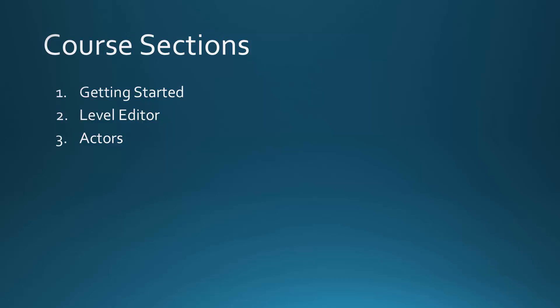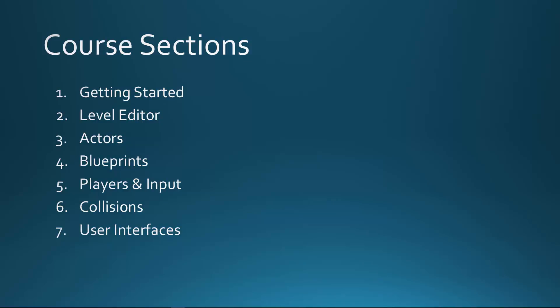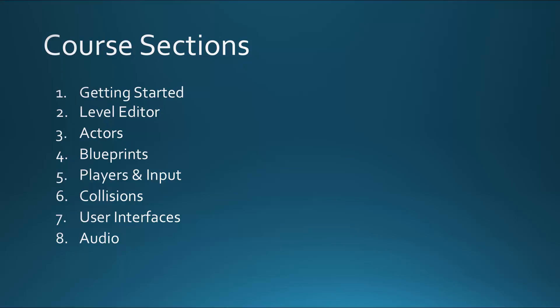The fourth section, Blueprints, will cover Unreal's blueprint system, which is a way to script logic for your game without having to know code. In essence, blueprints are a way for you to tell the engine how your game should function and what its rules are. The fifth section will cover how to create playable characters for your game and how to set up input for them. The sixth section will cover collisions, including taking damage from enemies when colliding with them and damaging enemies that you fire a projectile at. The seventh section will cover user interfaces and show you how to create menus and HUDs for your game. The eighth section will cover audio, showing you how to add music and sound effects to your game. The final section will cover any additional topics that don't fit into one of the previous categories.